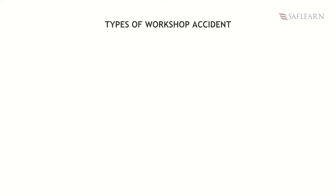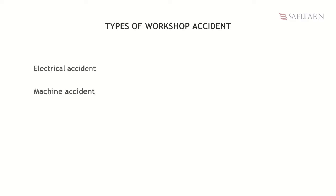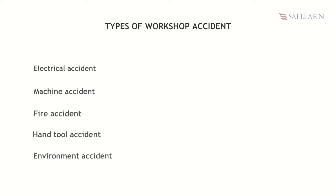What are the types of accidents that could occur in the workshop? There are five major categories of workshop accidents. They are electrical accident, machine accident, fire, hand tool, and environment accident.